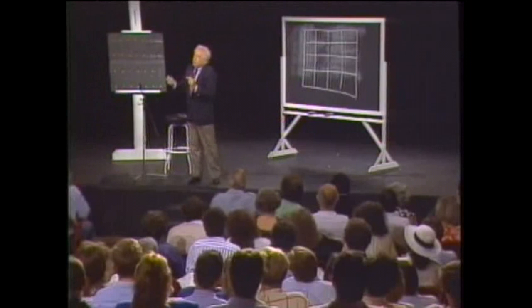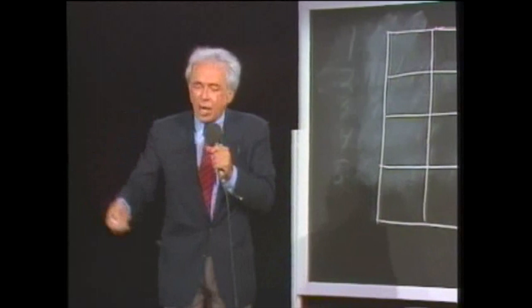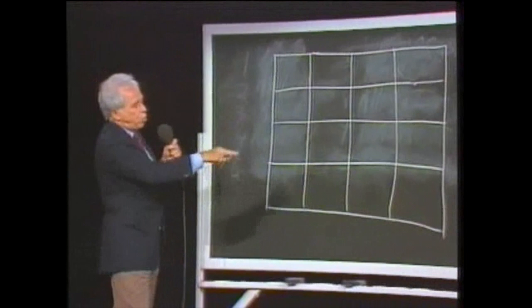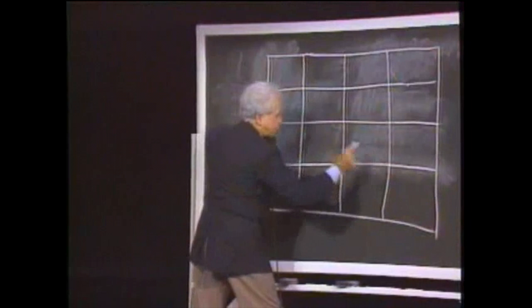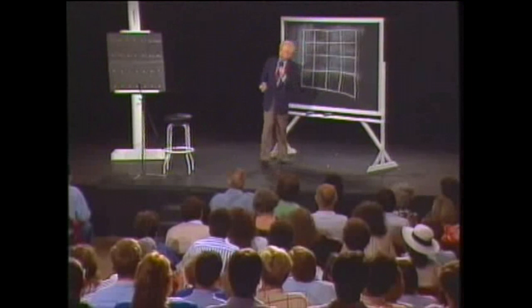What the mathematical genius, and I'm putting that in quotes, would do is he would ask somebody in the audience to call any number, and then after about a minute or two of thinking, he would put a number on each one of these squares. The point being that when he was through, every row from left to right would total the number called, and then every column up, down, would total the number called, and then the two diagonals would total the number called.